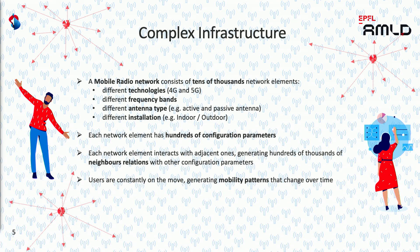A mobile radio network consists of tens of thousands of network elements that we call mobile cells. In Swisscom we have more than 100,000 active cells in the network. A cell can belong to different technologies — for example we have 4G cells, we have 5G cells now, but we still have 3G cells active in the network.